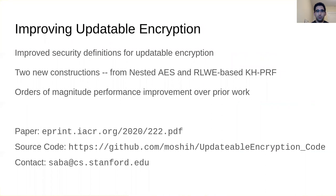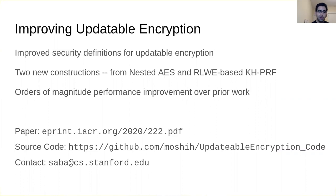In summary, we've presented improved security definitions for updatable encryption that hide ciphertext age, two new constructions from nested AES and a ring-LWE-based almost key-homomorphic PRF, and orders-of-magnitude performance improvements over prior work. The paper is available online at ePrint, as is the source code for our schemes and evaluation. For any questions feel free to contact me at sabah.cs.stanford.edu. Thank you so much for your time.